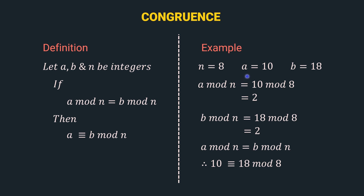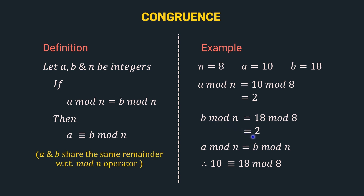Here, a i.e. 10 is congruent to b i.e. 18 mod n i.e. mod 8. And this expression is similar to this expression. Also, we know that the modulus operator gives us the remainder. So, the remainder of the first operation is 2 as well as the remainder of the second operation is 2. This means a and b share the same remainder with respect to the mod n operator, which in this case is mod 8. And that's the significance of congruence — it represents numbers that share the same remainder with respect to the mod n operator.